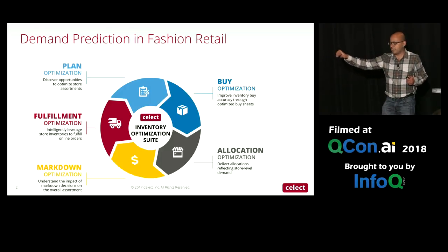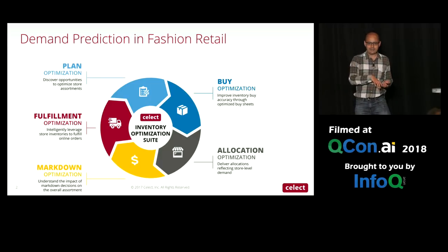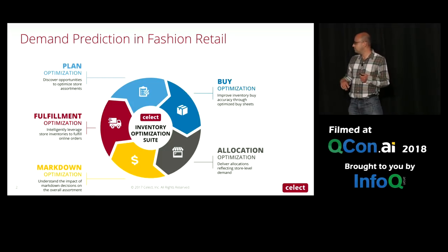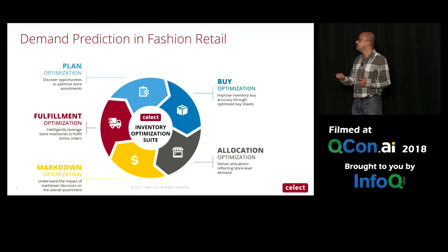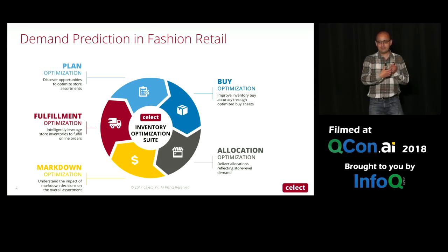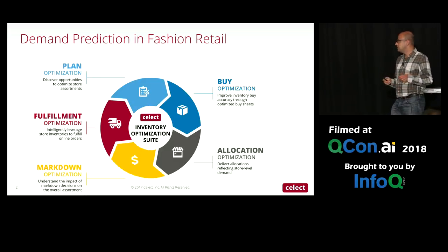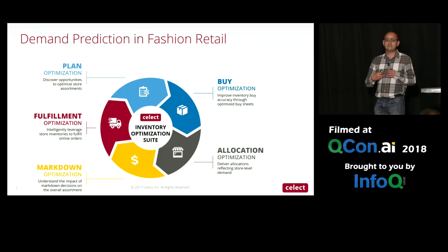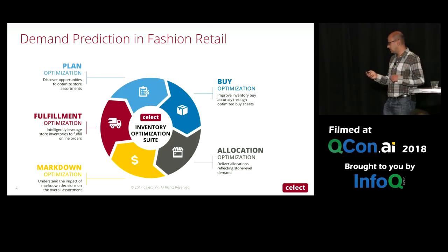Once that inventory is bought, the next focus is on allocations, and this happens throughout the season. Once products end up in the warehouse, they're figuring out which product should go to which stores based on inventory levels and demand they're seeing at the stores. Then once products are in the stores, based on demand prediction, they need to figure out what to sell at full price and when to mark down if they have too much inventory. There's also a fulfillment process for sourcing online orders, balancing demand in-store versus online. All of these problems involve similar data but are predicting at different points in the future at different levels of aggregation across products, departments, and classes.